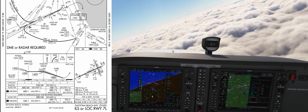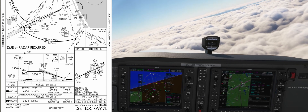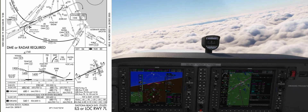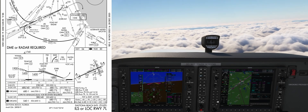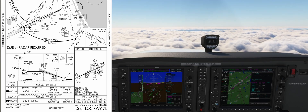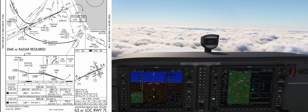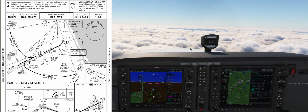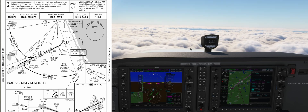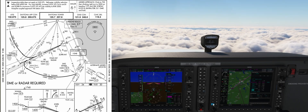Looking at the vertical layout of the approach, we need to reach FOLIG at or above 1,600 feet in order to intercept the glide slope. Our Category A straight-in minimums will be 230 feet and 4,000 feet of visibility. The missed approach procedure will have us climb straight ahead to 700 feet, followed by a right turn to SMIRA and climb to 3,000 feet and hold there.